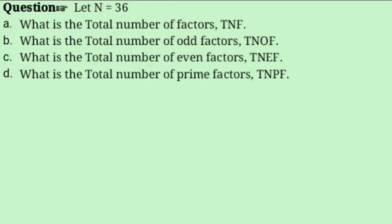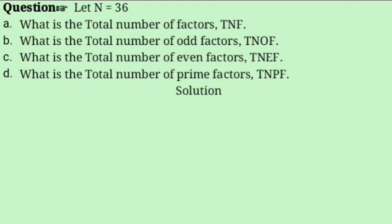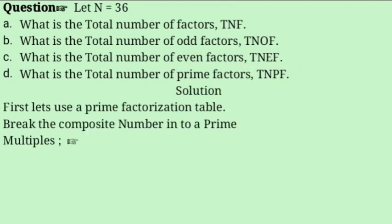For number 36, we need to find: the total number of factors (TNF), the total number of odd factors (TNOF), the total number of even factors (TNEF), and the total number of prime factors (TNPF). First, let us use a prime factorization table.